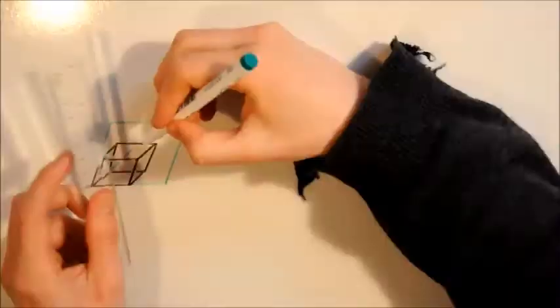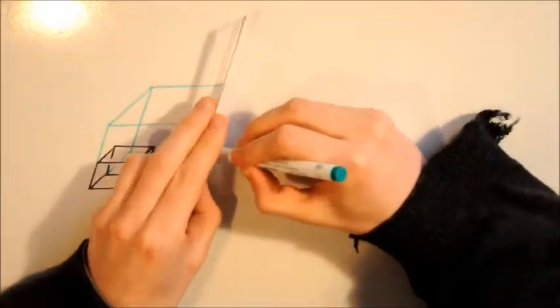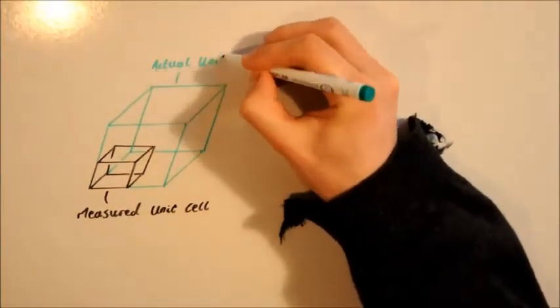This would mean that the unit cell you've calculated is eight times too small, and the actual unit cell is this green one. They are, however, the same unit cell, just different sizes.